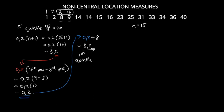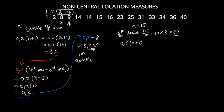For the eighth decile, deciles divide our data into 10 equal pieces. 100 divided by 10 is 10, multiplied by 8 gives 80. Converting to a decimal: 0.8 multiplied by n plus 1, which is 0.8 multiplied by 16, gives 12.8.